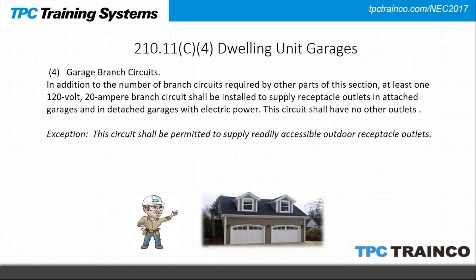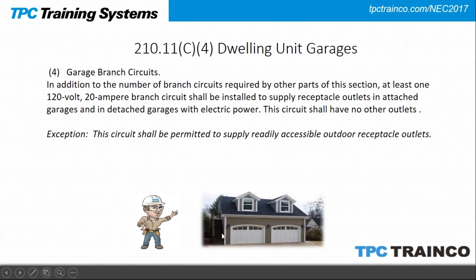Section 210.11 C4 addresses dwelling unit garages. Historically, a garage circuit was dedicated only to receptacles in the garage with no other outlets. Now there is an exception: this circuit is permitted to also supply readily accessible outdoor receptacle outlets. For a detached garage, this is very handy — you wouldn't have to run two separate circuits. One circuit can supply both the interior garage receptacles and the exterior outdoor receptacles on the same circuit.